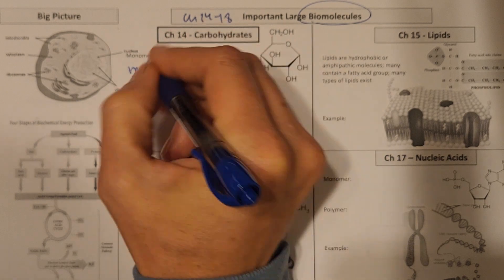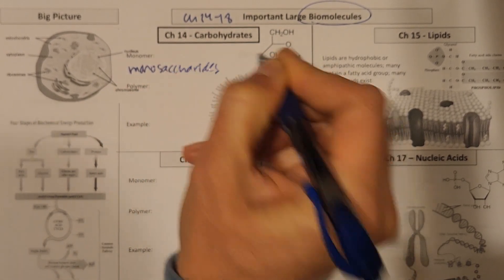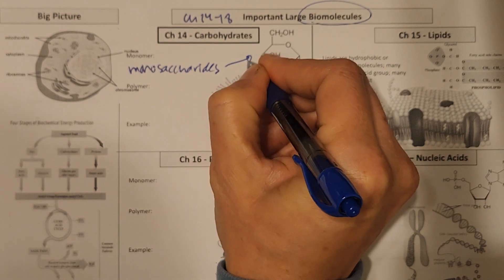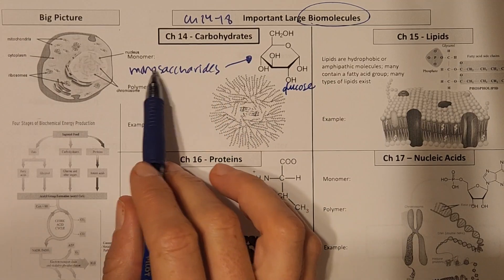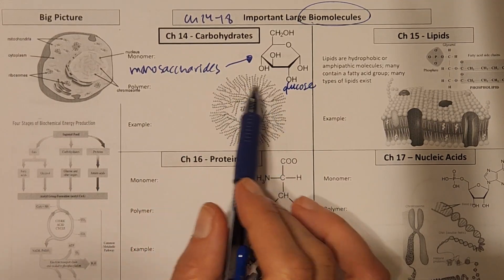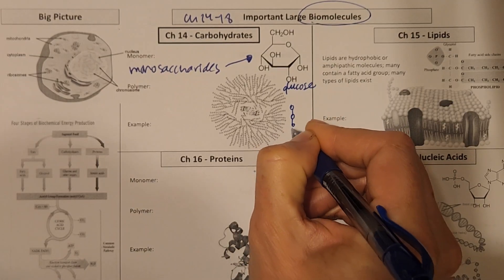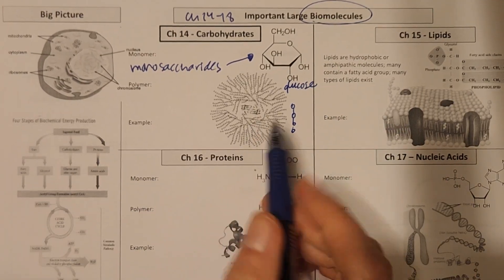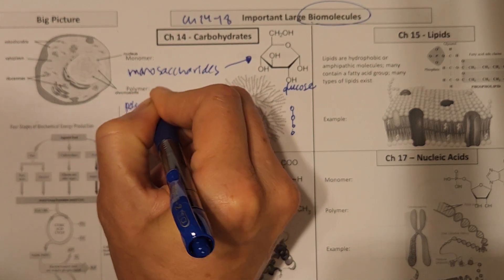So in carbohydrates, our monomers are specifically referred to as monosaccharides. And that's what we're looking at here. This would be glucose is what we see in this picture. Now we take those, and we string them together, and you can't hardly see it. But here are tons and tons of those glucoses all connected together. And so the polymer of a carbohydrate is called a polysaccharide.